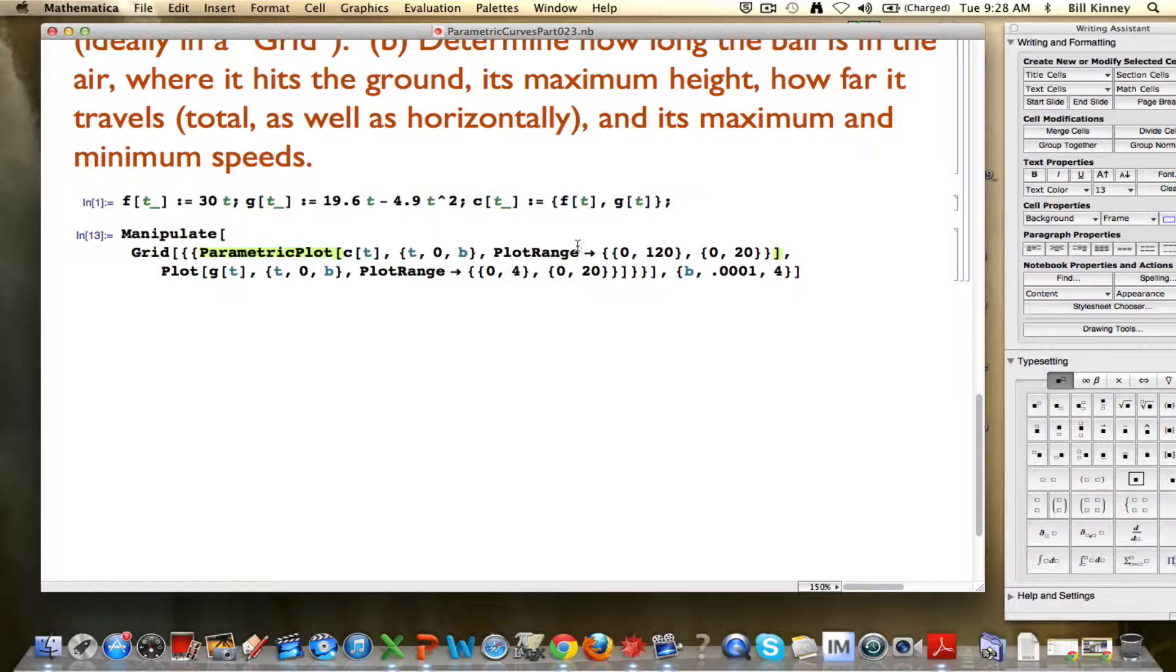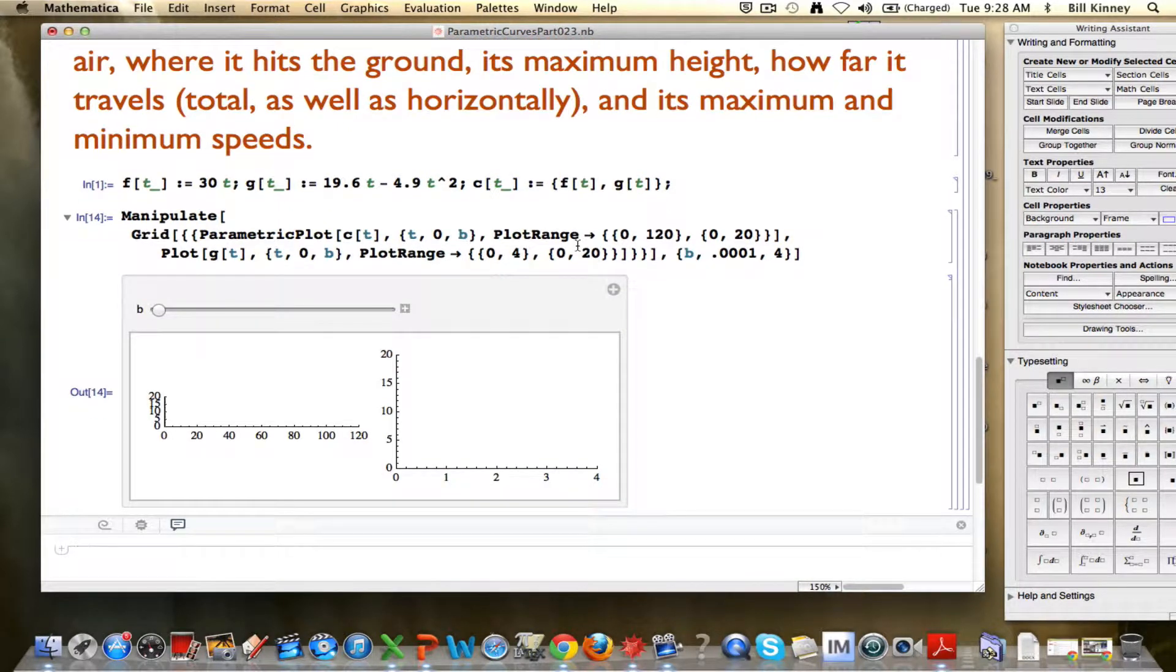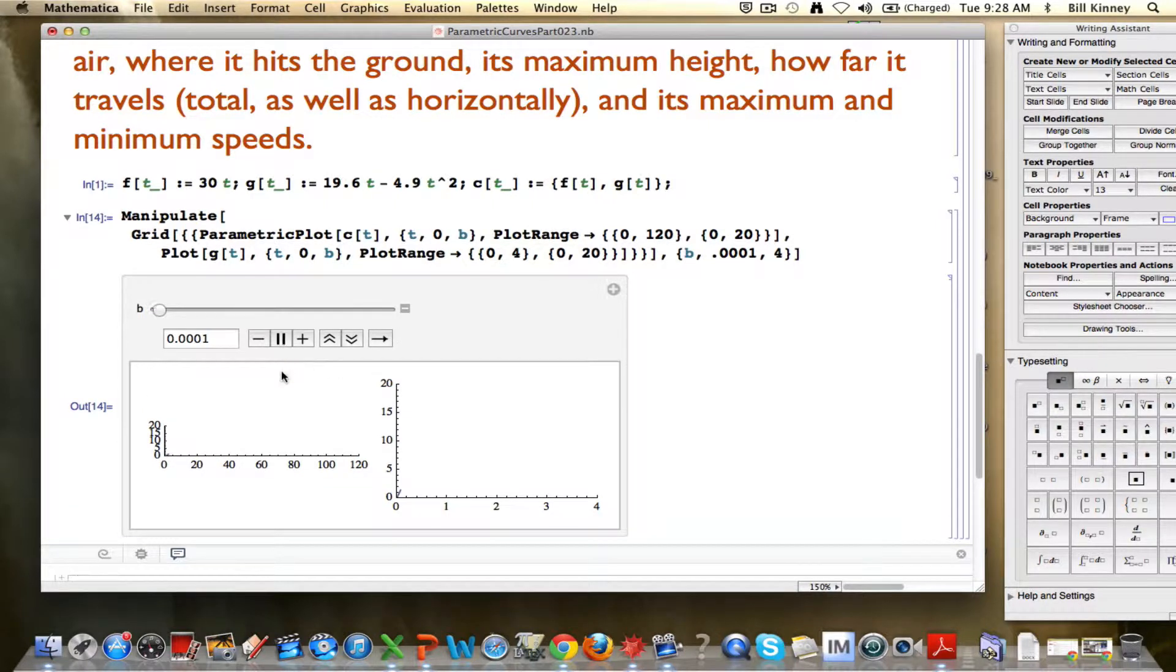So here is our manipulate animation from the last video to see what's going on here. The parametric curve itself, the motion itself, the trajectory is over here on the left. You can see that the ball reaches a maximum height of around maybe 18 or 19 or something. And it travels horizontally 120 meters.